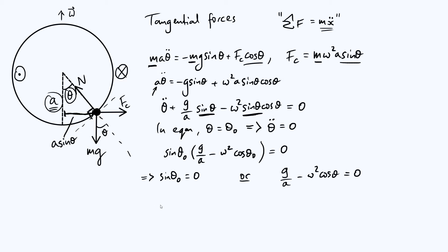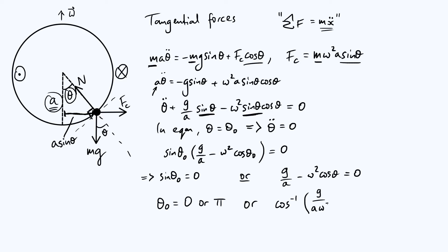This first case — sine theta-naught equals zero — implies theta-naught could be zero or pi, since sine of pi is also zero. Two pi would be equivalent to zero, so we just say zero or pi. The alternative solution comes from the bracketed term being zero: g over a minus omega squared cosine theta-naught equals zero, giving theta-naught equals the inverse cosine of g over (a omega squared). So we've found three equilibrium points.